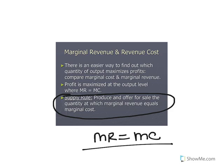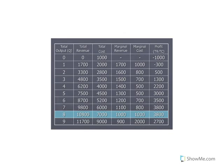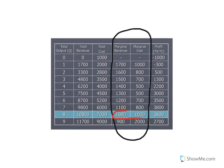We don't have to calculate profit margins for every single price level. All we have to do is produce the quantity of output where marginal revenue equals marginal cost. Looking at a table of data, go down the columns to find where they equal each other — at eight units of output, marginal revenue is $1,000 and marginal cost is $1,000. That is the profit-maximizing point of production.